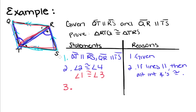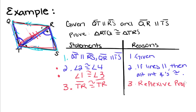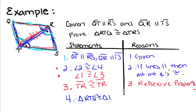We have one more step. So far we have two pairs of congruent angles. If you look, these two triangles share this side TR. So TR is congruent to itself by the reflexive property. Now we have one angle congruent to one angle, the included sides are congruent, and we have another angle congruent to another angle. If you remember, there's a property called angle-side-angle. Therefore, triangle RTQ is congruent to triangle TRS by angle-side-angle.